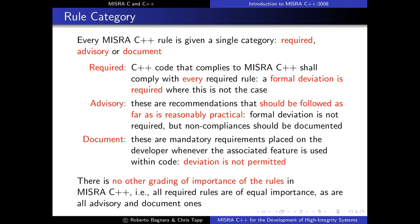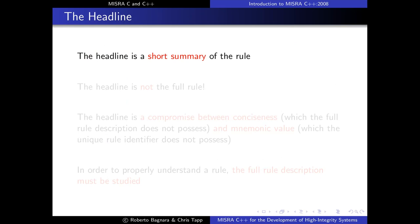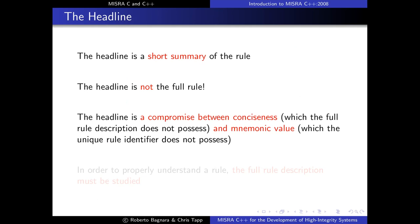Here is how rules are presented in MISRA C++ 2008: each rule has a rectangle with the word 'rule', a number, a category, headline text, issue reference, and normative text. Every rule has a unique number of three parts: AABBCC, where AABB gives the section number within C++ 2003 to which the rule relates, and CC is a sequential number for rules in that section. The number 0 encodes general rules not related to any specific area. Categories are 'required,' 'advisory,' or 'document.' The headline is a short summary—not the full rule—to quickly remind you of its content.